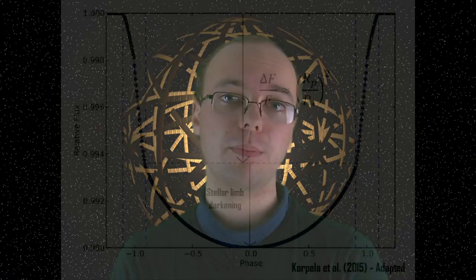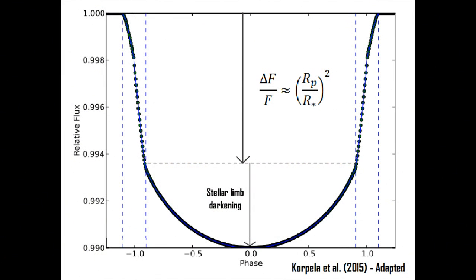So let's zoom in and actually look at a typical light curve that we would expect to see from a planet. The big things that I want you to take away is that the size of the dip depends entirely on how large the planet is — what its radius is.